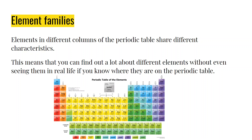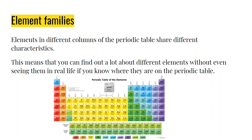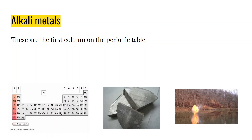Let's keep going. I'm going to introduce you to our first element family. These guys are called the alkali metals. If you look at the first column, you can see the different alkali metals highlighted in red. We have lithium, sodium, potassium, rubidium, cesium, and finally francium. All of these share certain characteristics, and they are the first column on the periodic table.